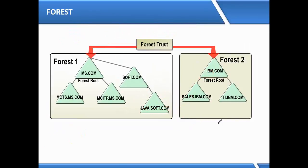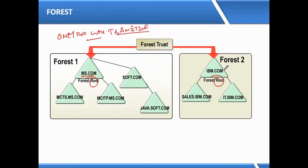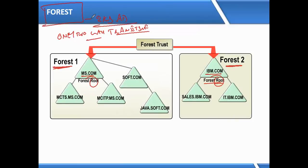The fourth type of trust is forest trust. Forest trust is configured between two root domains and is a one-way or two-way transitive trust. That means once I configure a trust between ms.com and ibm.com — the two roots — any user from forest one can log into any domain present in forest two. Vice versa, any user in forest two can be authenticated in forest one. You don't need to manually configure trust between other individual domains. This type of trust is called forest trust, introduced in Active Directory 2003.